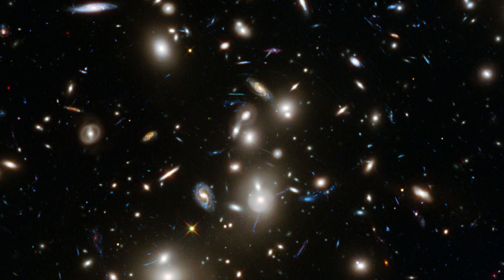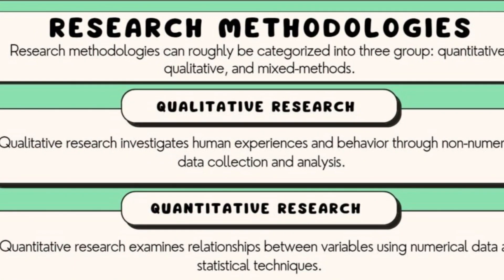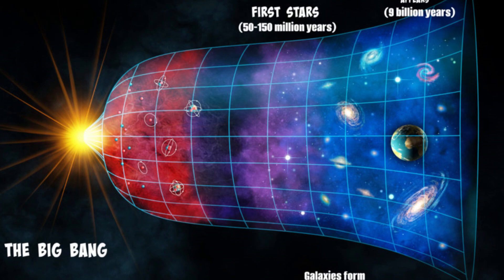The research methodology employed in the study is thorough. The model created by the team predicts that stars began to form approximately 50 million years after the Big Bang, a much earlier timeline compared to the mainstream model's forecast of 300 million years.